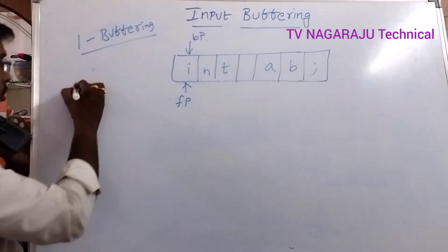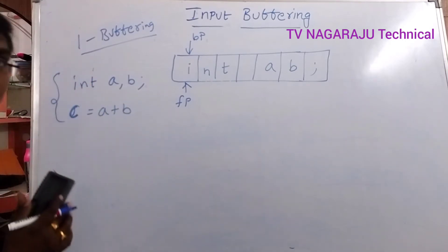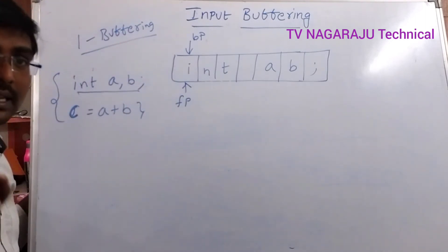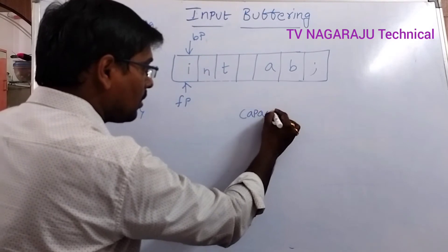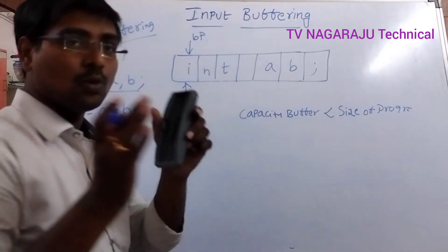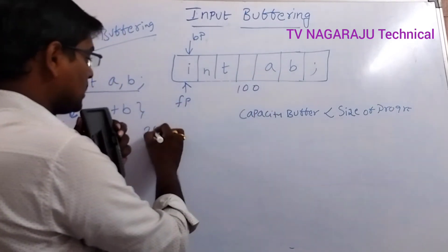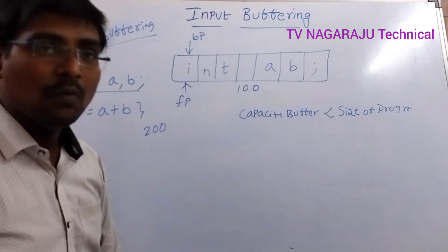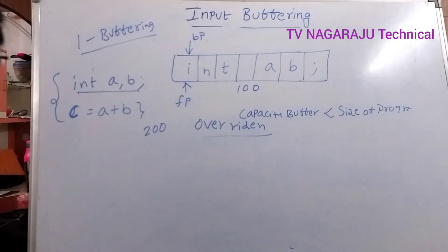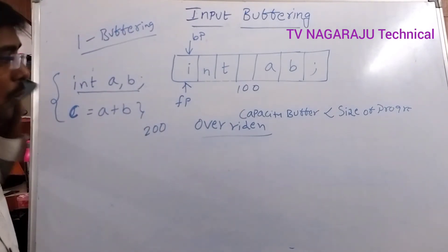The main problem of one-buffer scheme is: if the capacity of the buffer is less than the size of the program, not all data can be stored. Suppose the program size is 200 characters but the buffer can store only 100 characters — it is not possible to store all 200 characters at once. After the first 100 characters are processed, you have to perform an overwrite operation again. This repeated overwriting is the problem of one-input buffering.